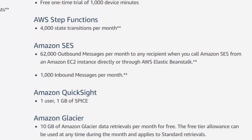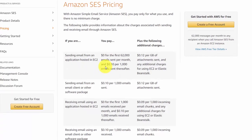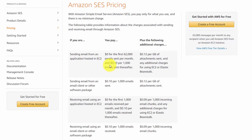If you are a new Amazon AWS customer, you'll be able to send the first 62,000 messages through Amazon SES absolutely free, in addition to having 1,000 inbound messages per month. After the first 62,000, you'll pay 10 cents per 1,000 emails sent afterward.